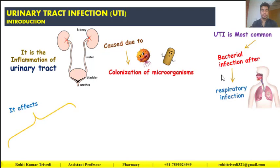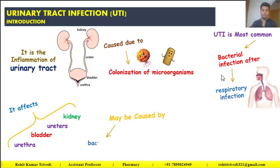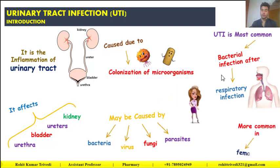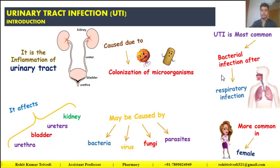It affects our kidneys, ureter, bladder, and urethra. It may be caused by bacteria, virus, fungi, and parasites. It is more common in females — when compared to males, females are at higher risk for urinary tract infections.